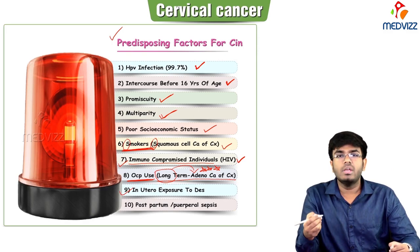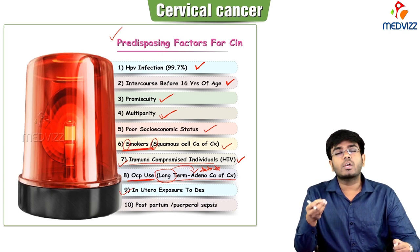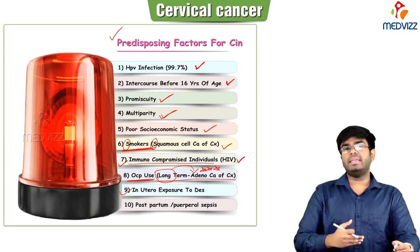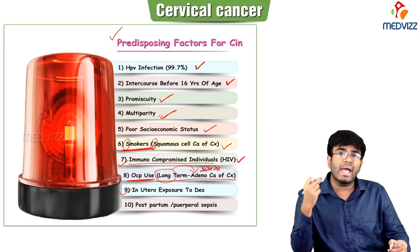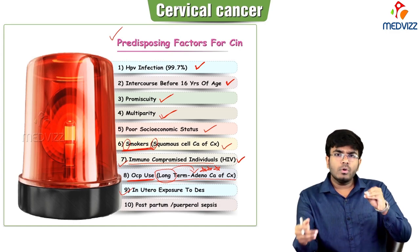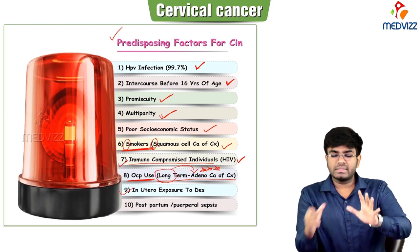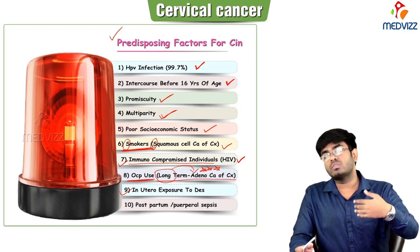In utero exposure to diethylstilbestrol is another risk factor. If the mother takes diethylstilbestrol during pregnancy and the developing baby is female, this drug will cause anomalies in the reproductive organs — congenital anomalies that push the transformation zone more towards the outside. If the transformation zone is more exposed to the outside, there is more risk of dysplastic changes.